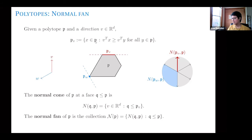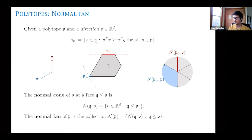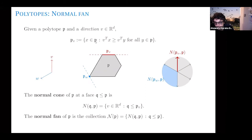The collection is closed under taking faces. For example, a two-dimensional cone and every face of that cone — such as its rays or the origin itself — are all in the collection of normal cones of P. This inequality between cones means that Q is a face of P.